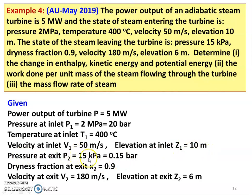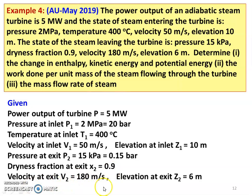Outlet conditions: pressure P2 equals 15 kilopascal, which is 0.15 bar. Dryness fraction X2 equals 0.9. Velocity V2 equals 180 meters per second. Elevation Z2 equals 6 meters.